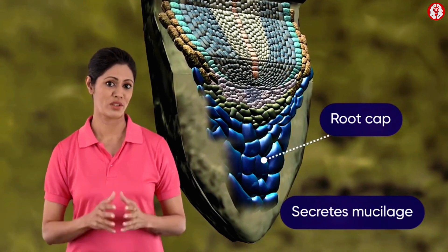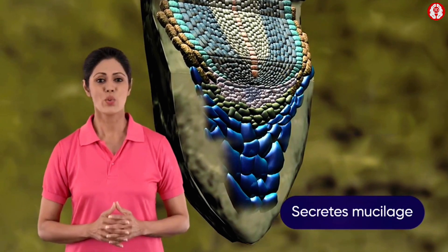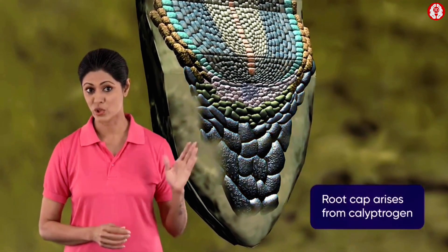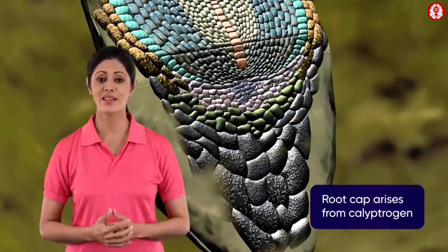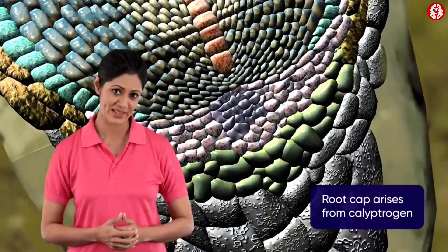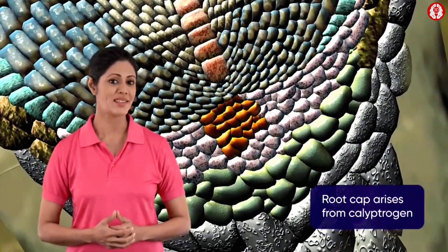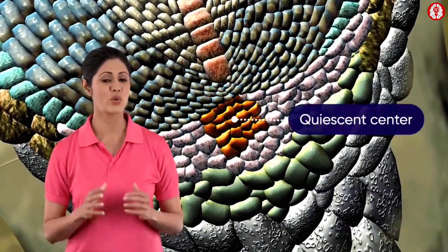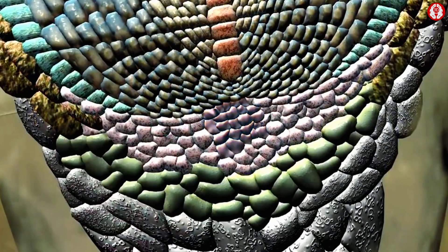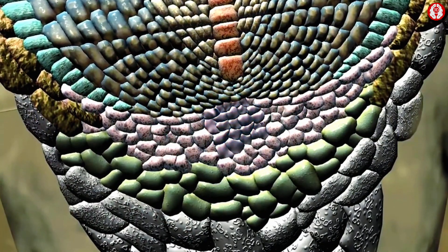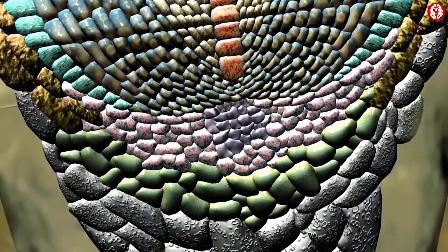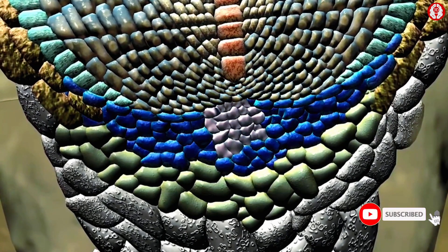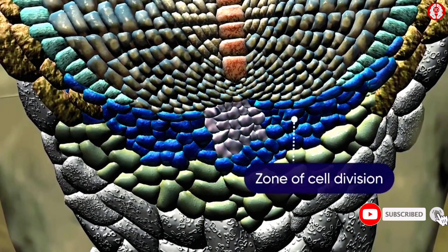Above the root cap is a pad of cells called the quiescent center. The cells of this region rarely divide, and it is located near the root cap region.